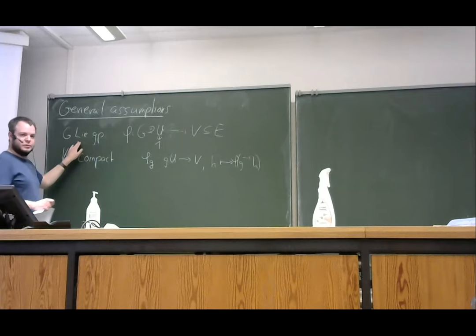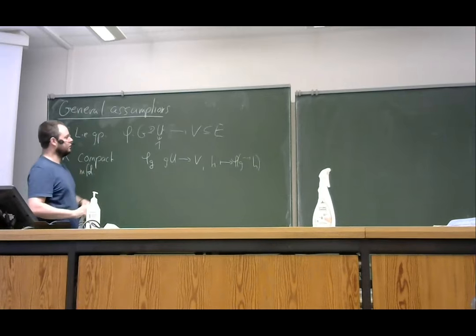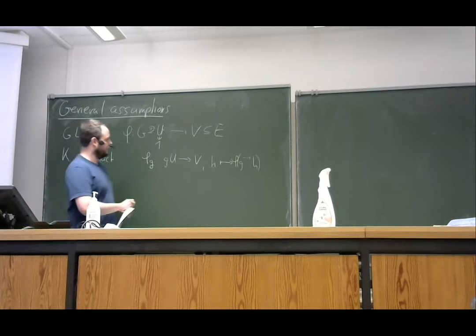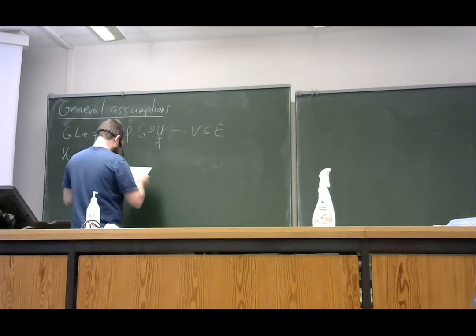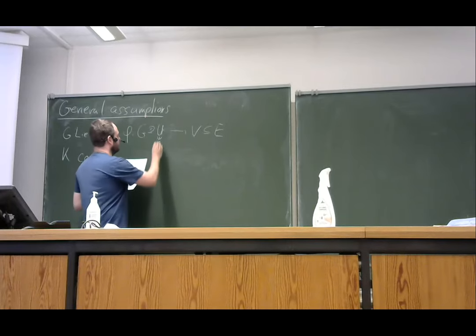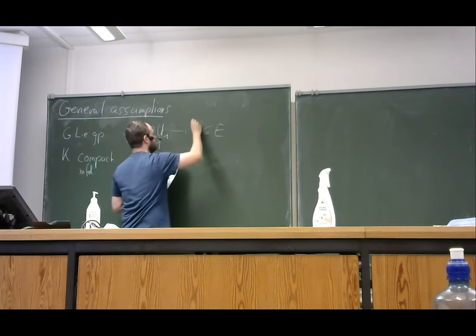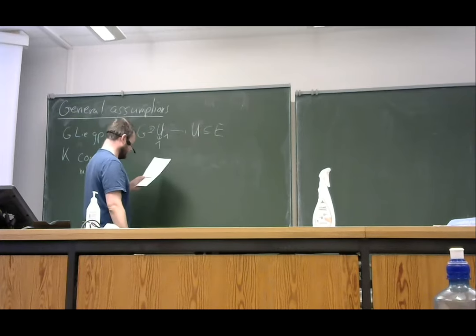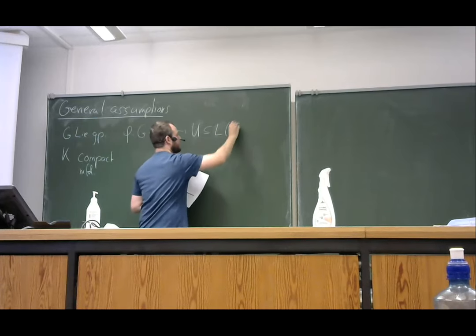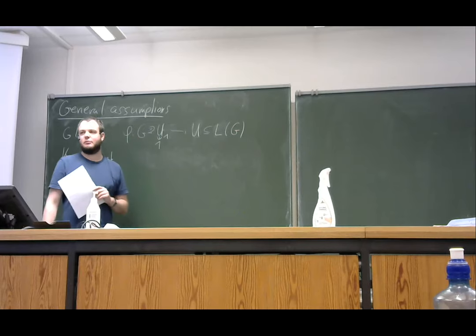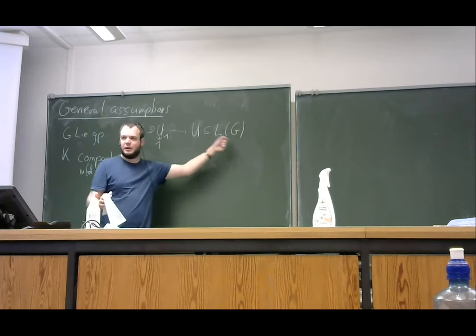So G will always be a Lie group, K will always be a compact manifold, and we want to fix a chart around the identity. As we have seen, I can identify the model space with the Lie algebra of G. This will be important later because we also want to identify the Lie algebra of the current group, and it will be convenient if we are already mapping into the Lie algebra.